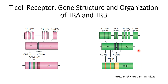Looking at the gene structure and organization of the alpha chain genes: the alpha chain genes consist of variable region, J junction region, and constant genes. There are 47 variable regions, 61 J joining regions, and one constant region. Each combination of a variable region, a joining region, and a constant region gives rise to a complete T cell receptor molecule.